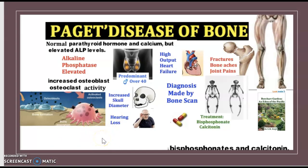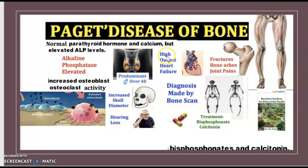Let's review. Paget disease affects males over 40. Parathyroid hormone and calcium are normal, but alkaline phosphatase is elevated. There is increased activity of osteoblasts and osteoclasts, increased skull diameter, hearing loss, high output heart failure, and many bone fractures. Diagnosis is made by bone scan, and management involves bisphosphonates and calcitonin.